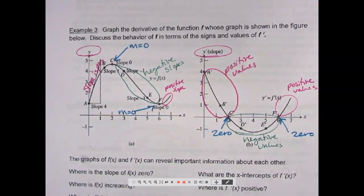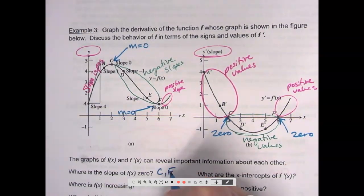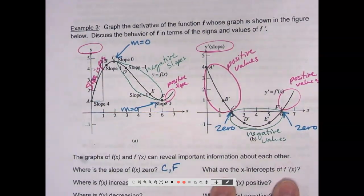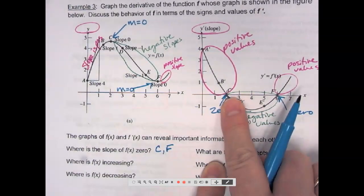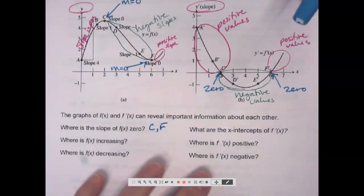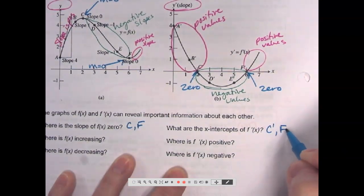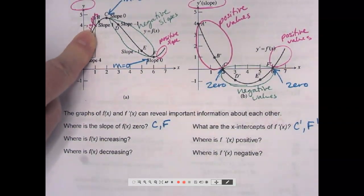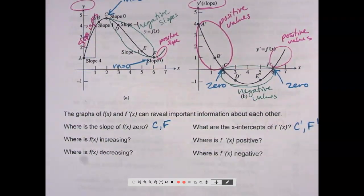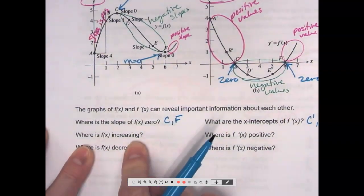Where is the slope of f of x, 0? We can just use the letters A, B, C, D, etc. C and F. What are the x-intercepts of f prime of x? See how they put a little prime on there? So that just means that point corresponds to C. So we'll call that C prime, F prime. So anytime I have a slope of 0 on a function, the graph of its derivative will have a 0, aka x-intercept, corresponding to that point.